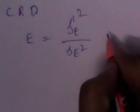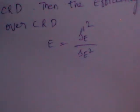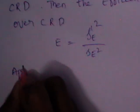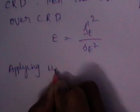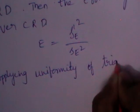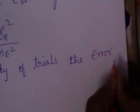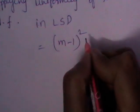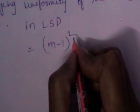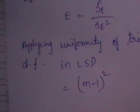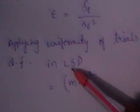Now let us find out these two separately. Similar to the previous comparison of LSD over RBD, to compare the two designs we should have an equal number of factors. Applying the uniformity of trials, we need to check the error degrees of freedom in LSD.